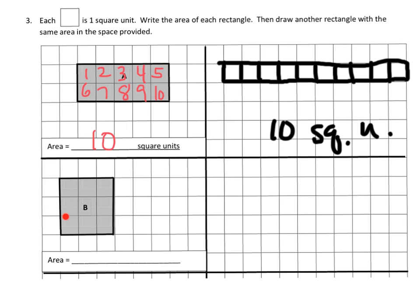Down here, counting one through nine — this has an area of nine square units. To make another rectangle with the same area, I'll go in a straight line again: one, two, three, four, five, six, seven, eight, nine. There it is — nine square units.